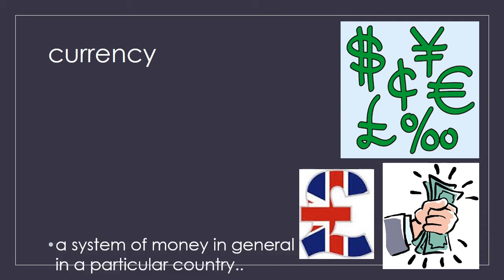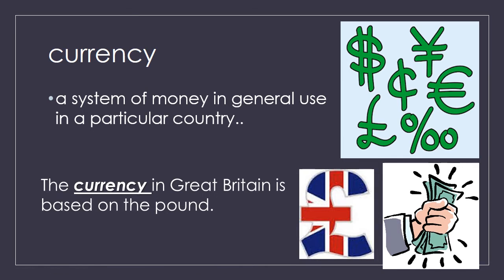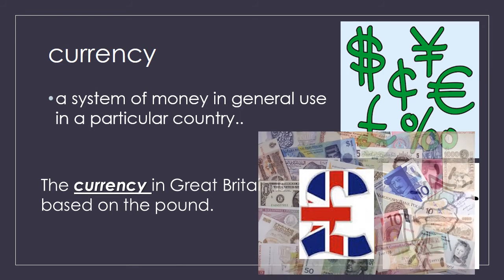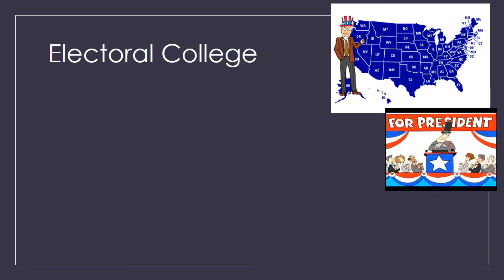The word currency means a system of money in general use in a particular country. You can see in the right-hand corner we have the dollar, the pound, the euro, and the yuan — these are all currencies. The currency in Great Britain is based on the British pound, and you can see that trademark symbol with the L and a line through it. A British pound is almost like a dollar, but it's the dollar for the United Kingdom.